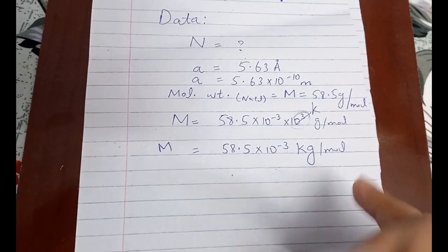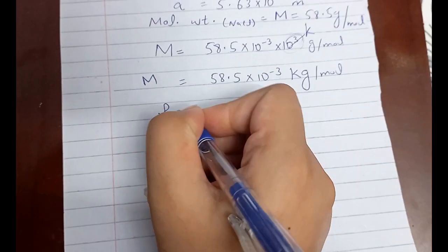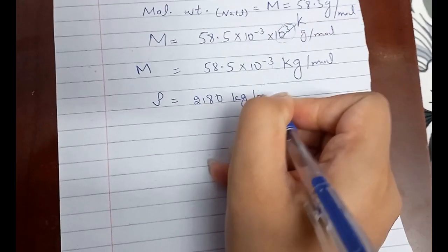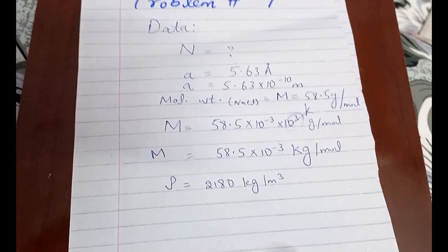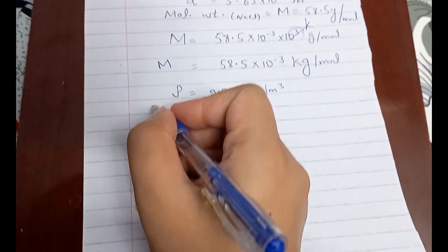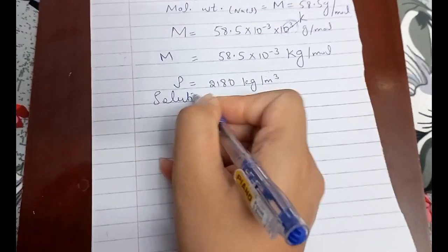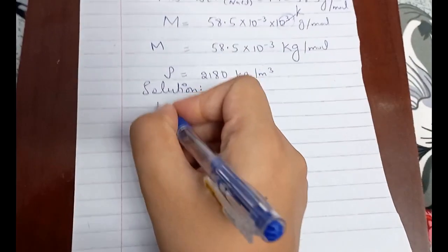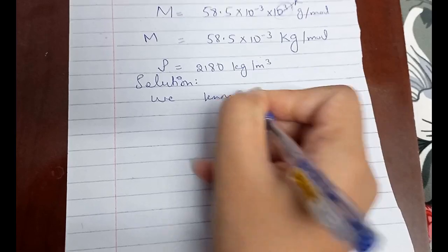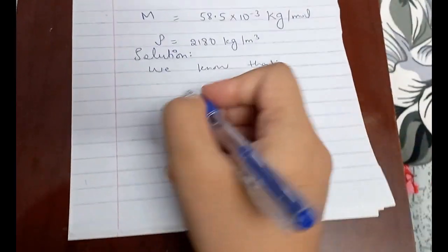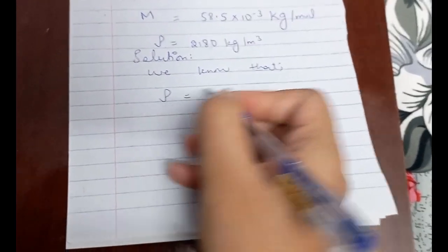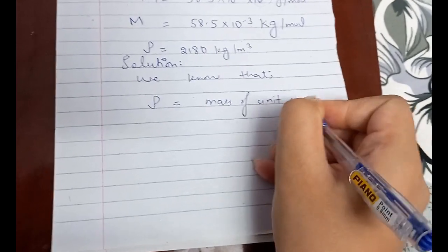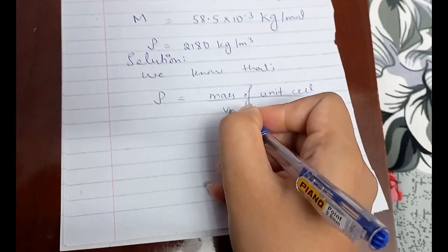Now this is in SI units and we can simply put it into the equation. We are given the density which is 2180 kg per meter cube, it is in SI units, that's perfect. Now we have the data and we'll use the formula to find out what we are seeking, which is capital N. We know that the formula for density is given by rho equals total mass of unit cell divided by the volume of unit cell.